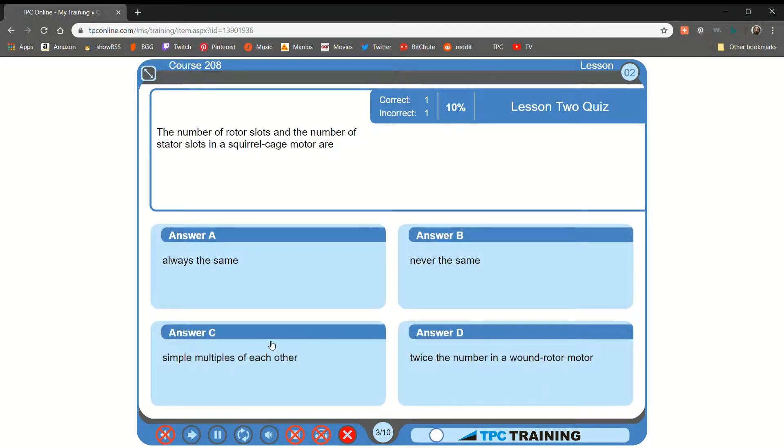The number of rotor slots and the number of stator slots in a squirrel cage motor are A. Always the same. B. Never the same. C. That is correct.